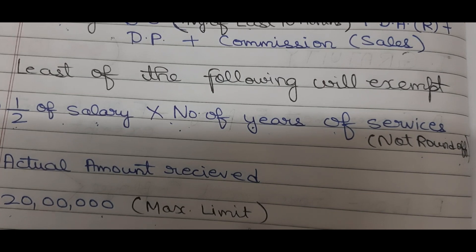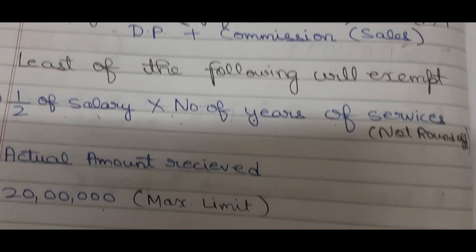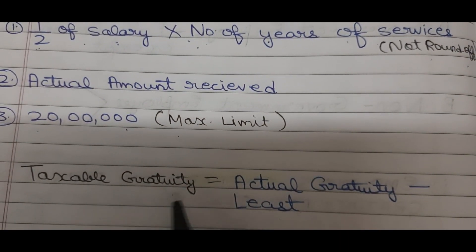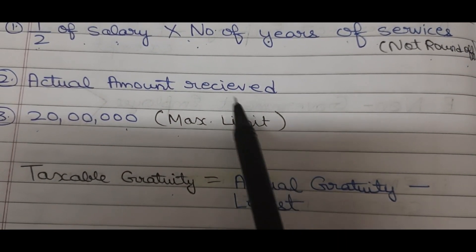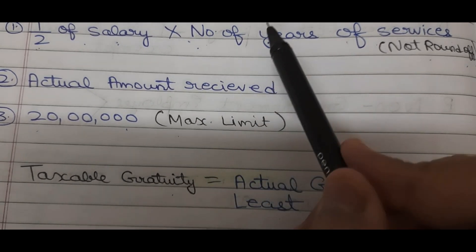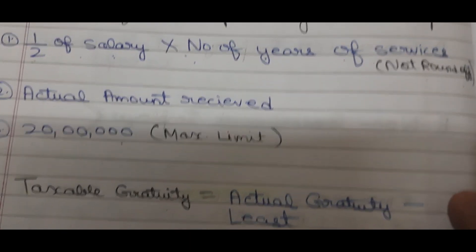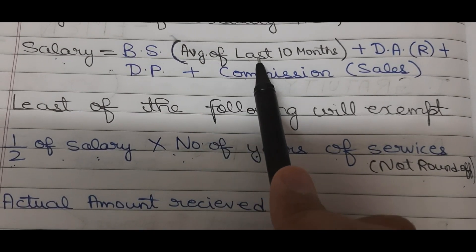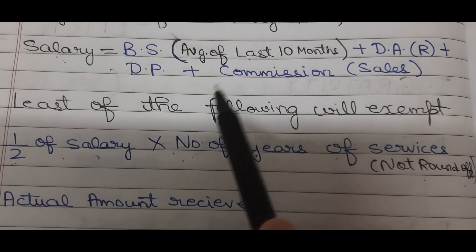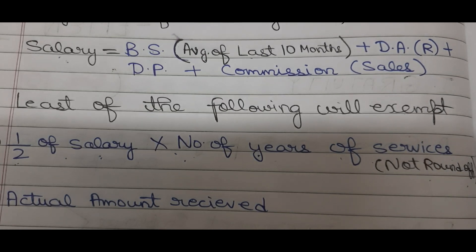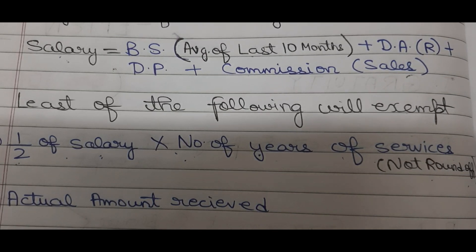We need to find the taxable amount in this question, so taxable gratuity = actual amount received minus whichever is least among the three. For number of years of service, we will not round off — even if months exceed 6, we do not round up. In this question it is 36 years 9 months, so even though 9 months is more than 6, we only write 36 years. Now let's see the solution for question 7.